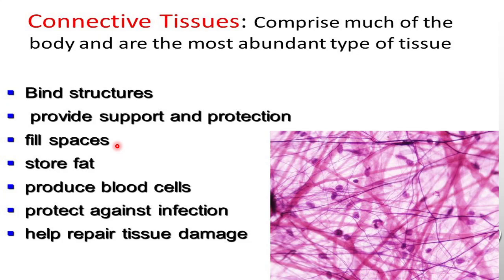Blood fills spaces. Adipose connective tissue stores fat. Bone marrow produces blood cells. The connective tissue protects against infection by producing white blood cells — monocytes and lymphocytes are produced within the connective tissue itself. It also helps in repair of tissue damage.